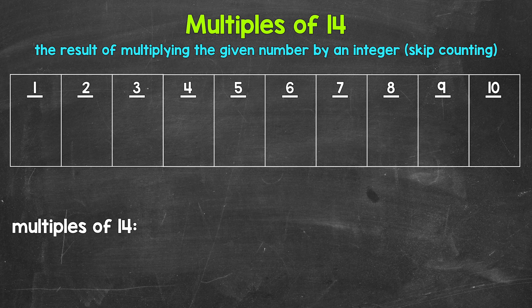Now remember, a multiple is the result of multiplying the given number by an integer. So one times 14, two times 14, three times 14, so on and so forth.